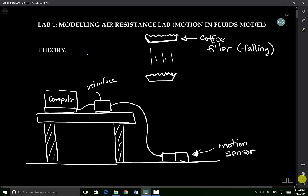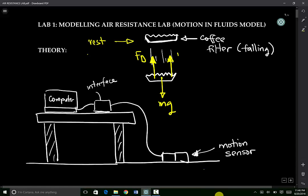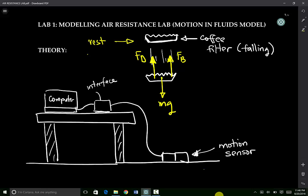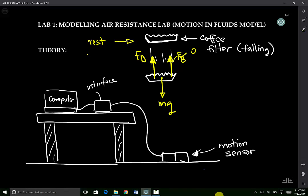Initially, the coffee filter is at rest. When the coffee filter is allowed to fall, it experiences three forces. You have gravity, which acts vertically downwards — this is mg. It experiences a drag force F_D, which always acts in the opposite direction to which the object is moving through the fluid. It also experiences a buoyant force, also commonly known as the upthrust force. In accordance with Archimedes' principle, the buoyant force acting on an object submerged in a fluid is equal to the weight of the fluid displaced. But because the volume of the coffee filter is very small, we will neglect the buoyant force and assume it is zero.